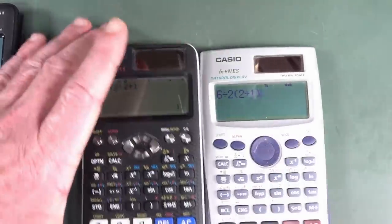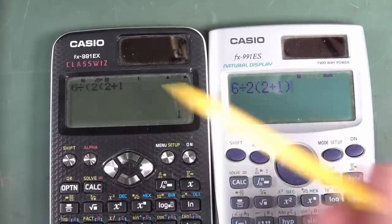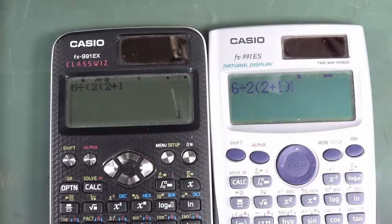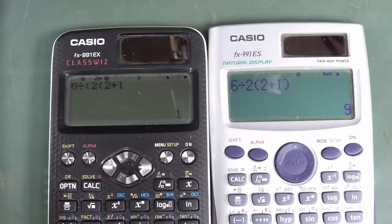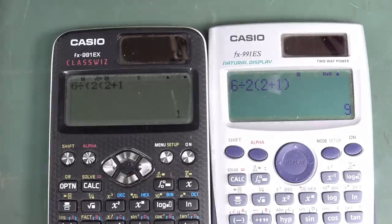And this isn't necessarily related to the implied multiplication. Because, as you saw here, both of these are VPAM calculators, but they give a different result. So you can't rely on just VPAM and non-VPAM actually giving you this. It's calculators for a specific market.